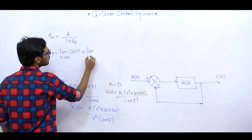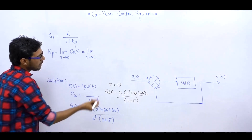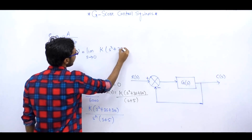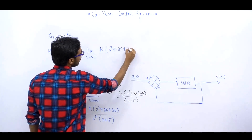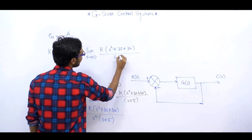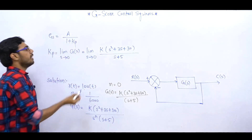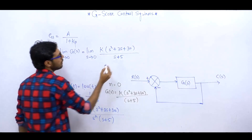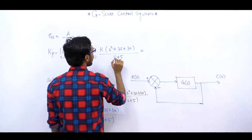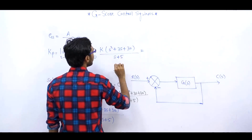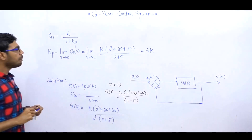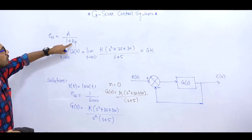KP निकालते हैं: limit S tends to 0, G(S). देखो यहाँ पर क्या है — K into (S² + 3S + 30) divided by (S + 5), divided by (S + 5)। यहाँ पर limitation solve करो — S की जगह 0 रखो। तो यह term 0 होगा, (0 + 3×0 + 30) = 30, denominator (5×5) = 25... देखो कितना आएगा।